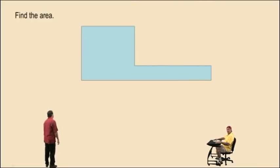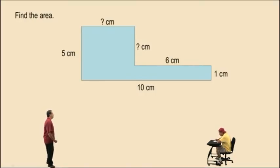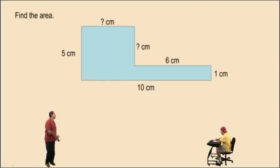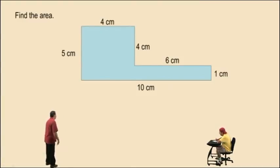Find the area. This is 5 centimeters, that's 10 centimeters, that's 1 centimeter, and that's 6 centimeters. And those two side lengths we don't know. But we will be using the same shapes we used in our perimeter video. So we found those missing side lengths back in the perimeter video, and that was 4 centimeters and that was 4 centimeters.